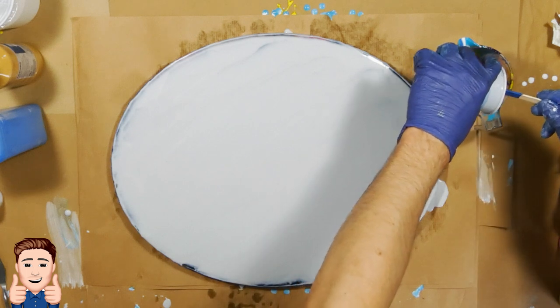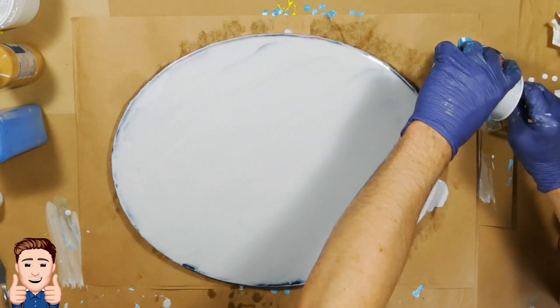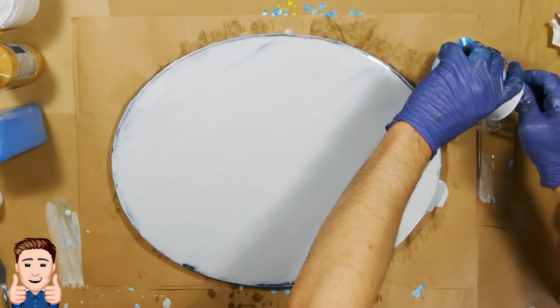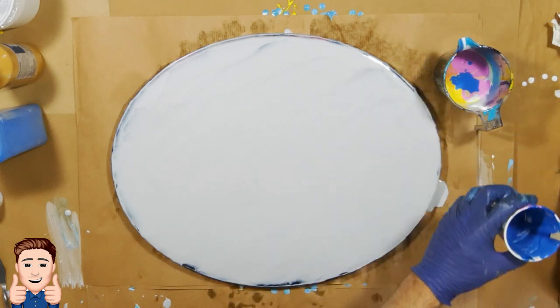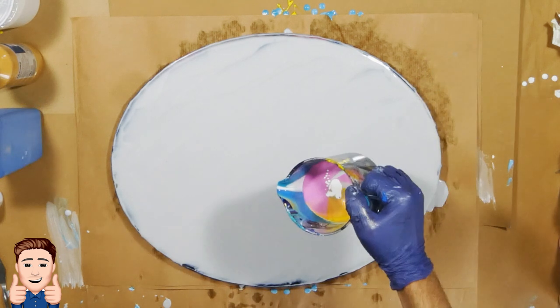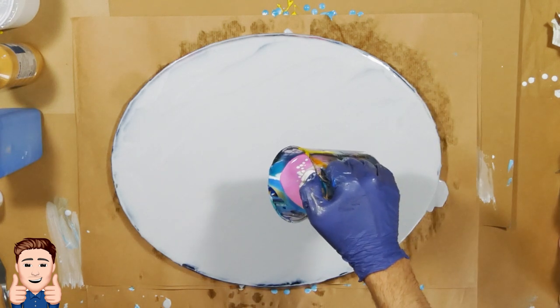There actually is not so much more to tell for the video itself. It is a regular ring pour, and usually we don't use the torch and silicone for ring pours, but this time it was totally up to his decision what to make.